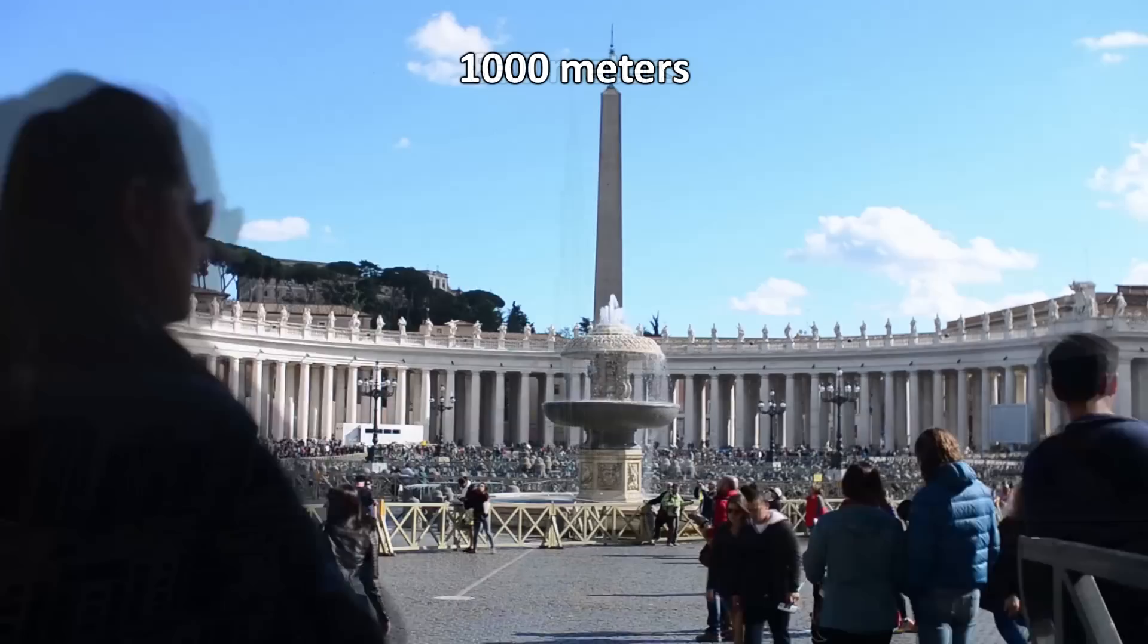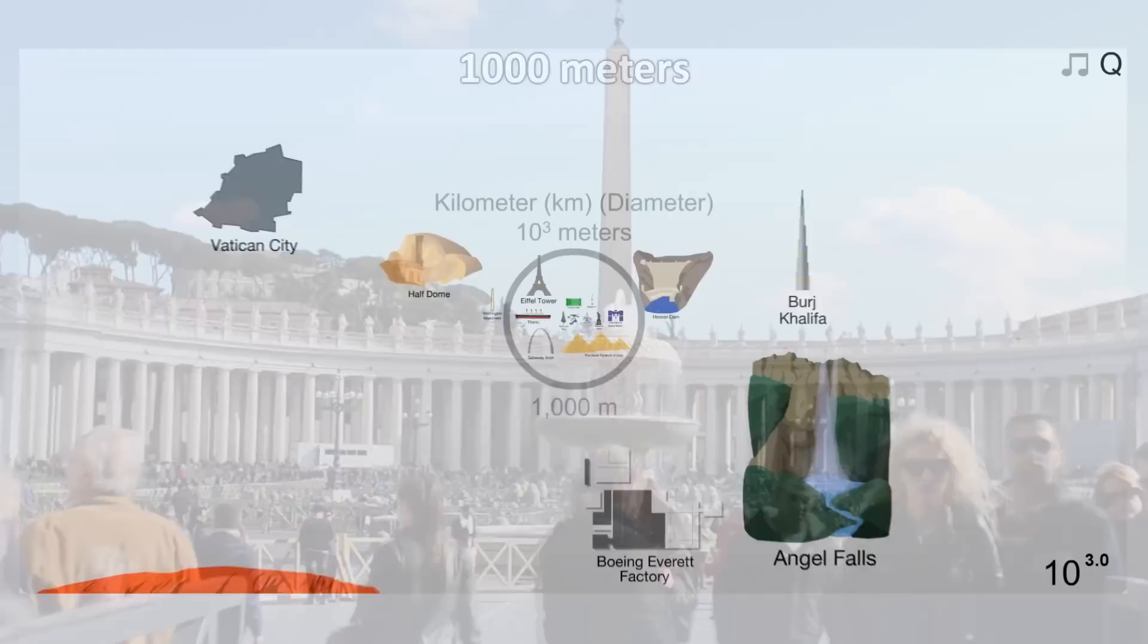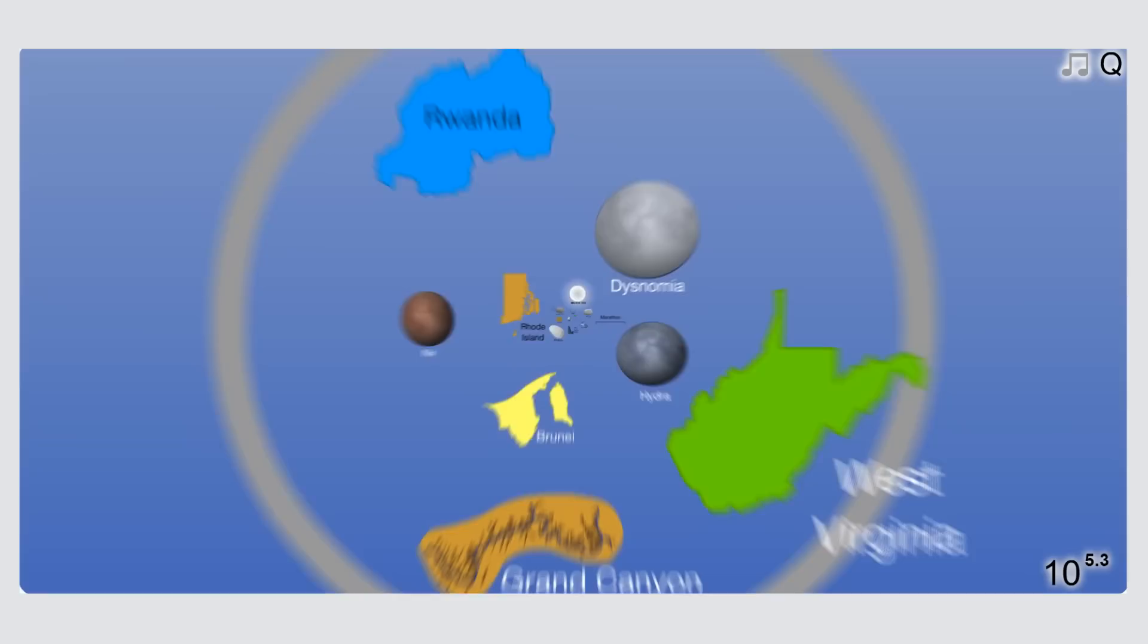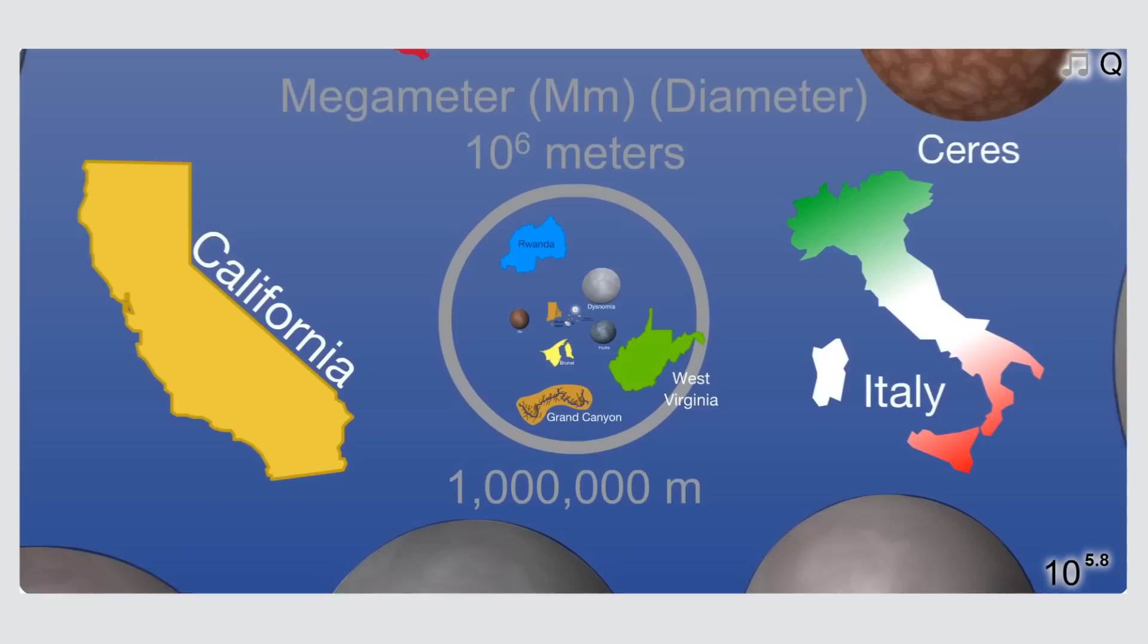Let's go 1000 times bigger than this, 1 million meters. Now we're on the scale of California and Italy, both of which are about 1200 kilometers in length. We also begin to approach now some of the smallest spherical celestial objects.